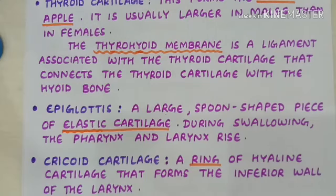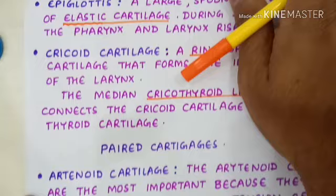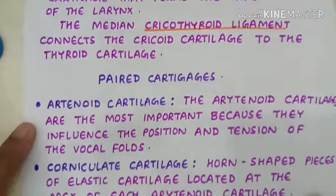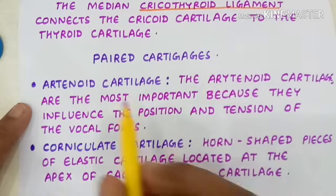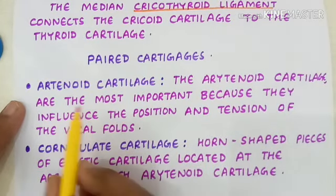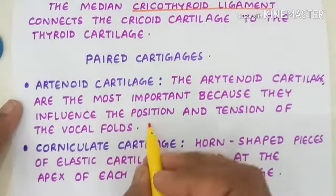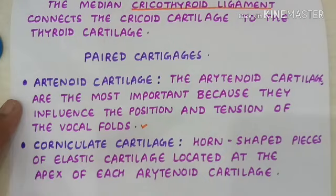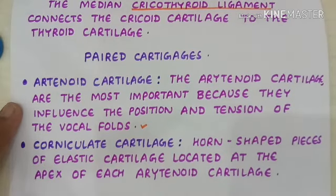The three paired cartilages are the arytenoid, corniculate, and cuneiform cartilages. The arytenoid cartilages are the most important because they influence the position and tension of the vocal folds, helping in phonation.